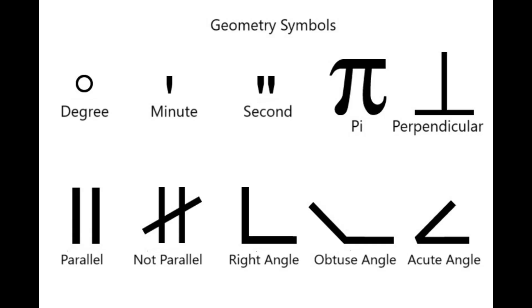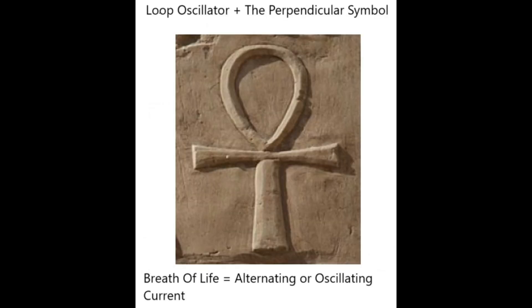A T orientated either way would be equally as effective at communicating perpendicularity. Our mathematicians probably opted for the upside-down one to avoid confusion with the letter T. So, to summarize: Ankh means breath of life, and I think that should be interpreted as alternating or oscillating current. And I believe the actual symbol is a representation of a loop oscillator on top of a visualization of one of the fundamental principles of electromagnetism.